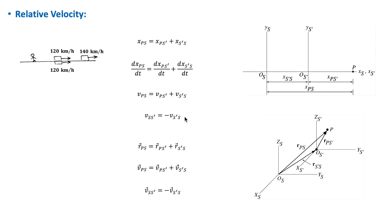We can extend this to three dimensions in the case where the velocity of S' with respect to S is constant in both magnitude and direction, i.e., V_{S'S} is constant. From the figure, the position vector of particle P relative to S equals R_{PS'} plus R_{S'S}. Differentiating with respect to time gives the corresponding velocity equation.